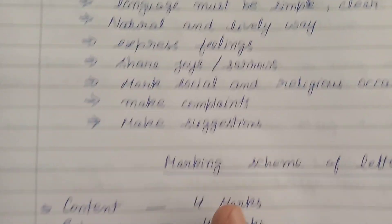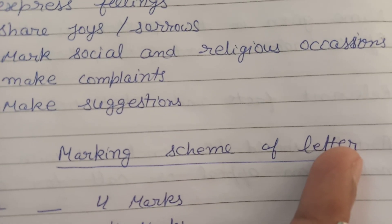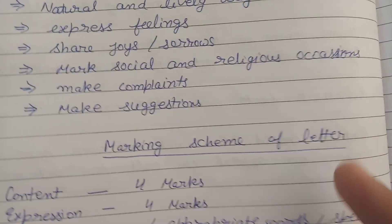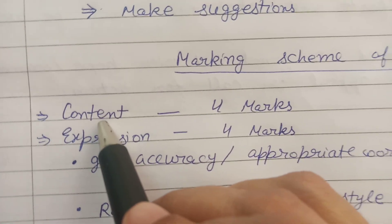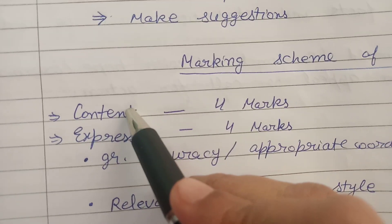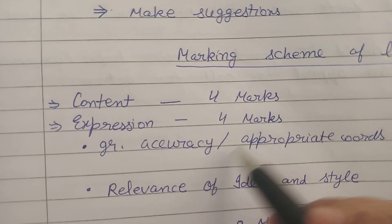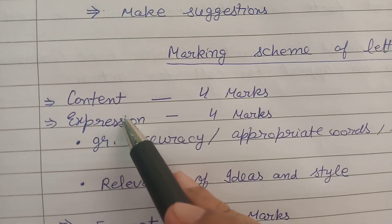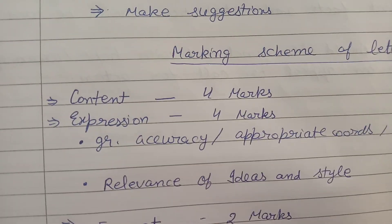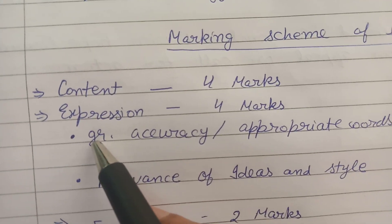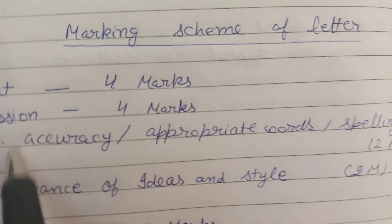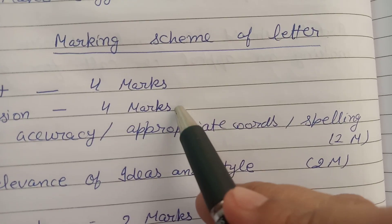Now I want to tell you the marking scheme of the informal letter. As you know, it is of 10 marks. These 10 marks are divided into three things. First is content, which is 4 marks — content means the body part of the letter, which must include at least 3 paragraphs. Second is expression — how you express your views — worth 4 marks, including grammar accuracy, appropriate words, and spellings.